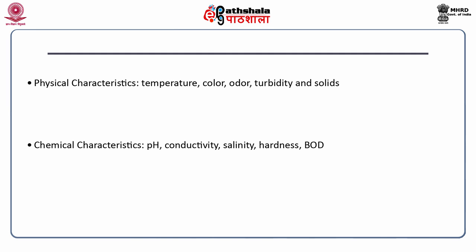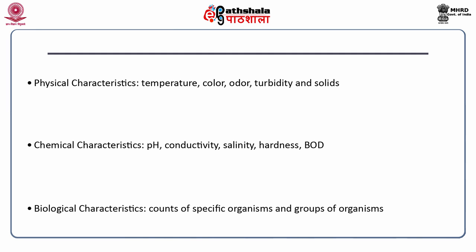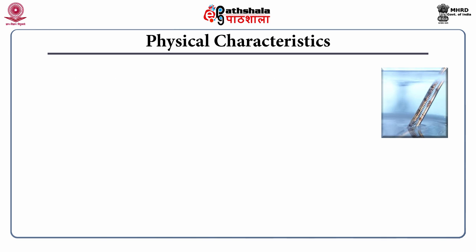Second, the chemical characteristics which include pH, conductivity, salinity, hardness, DO, etc. And third, the biological characteristics which accounts for counts of specific organisms and groups of organisms. The physical characteristics are determined by sense of touch, sight, smell and taste. For example, temperature by touch; colour, floating debris, turbidity and suspended solids by sight; and odor by smell.